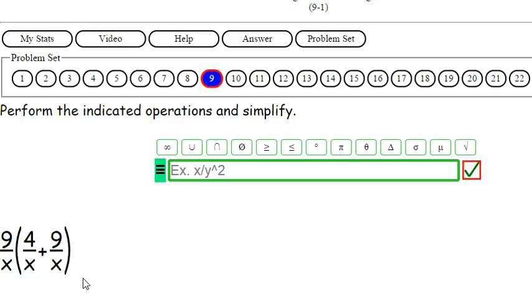So it looks like we have a little combination. There's some multiplication in this problem, adding and subtracting. So we have 9 over x times 4 over x plus 9 over x. That's something a little different.